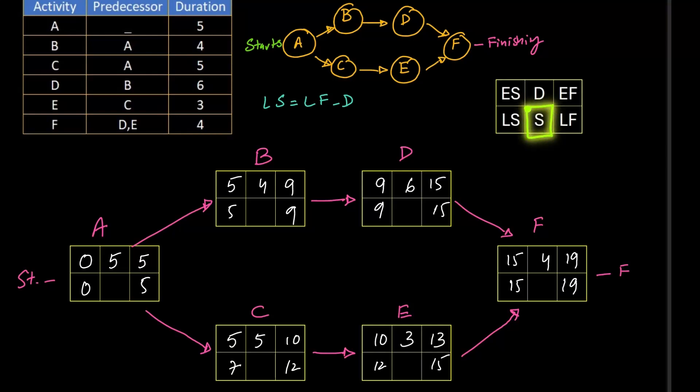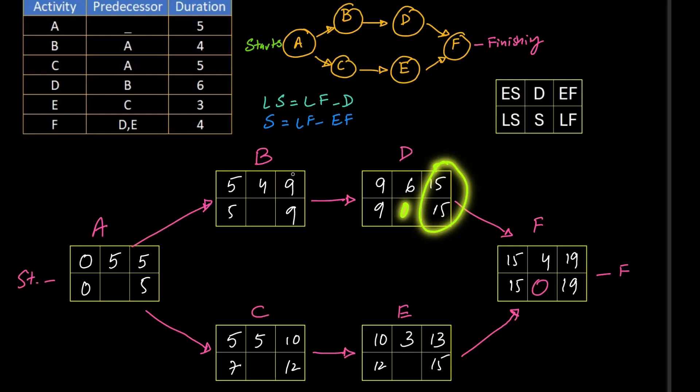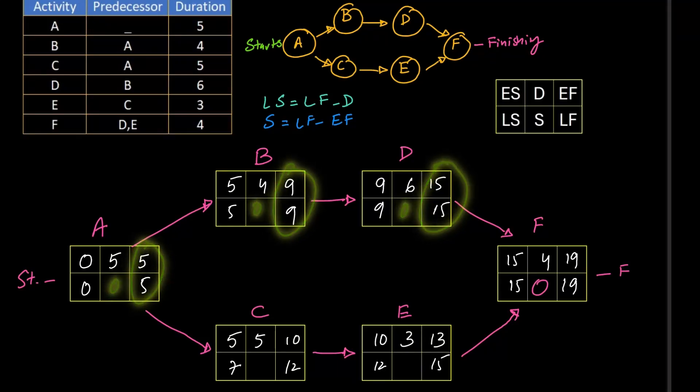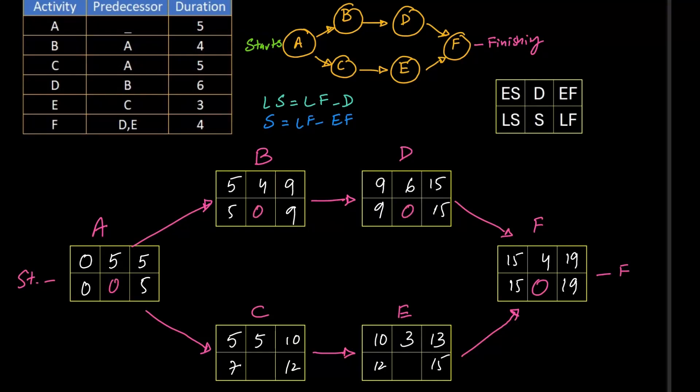Now we have left a very important box, which is this one, the slack box. If there is a presence of slack in an activity, that will mean that activity can be delayed. And slack's formula is S equals to LF minus EF. So these are the two boxes that are in action for slack. LF minus EF will give us slack for the particular activity. 19 minus 19 equals 0. 15 minus 15 equals 0. 9 minus 9 equals 0. 5 minus 5 equals 0. So we can put zeros in A, B and D. On the other hand, E has 15 minus 13, so the slack will be 2. Similarly, C has 12 minus 10, the slack will be 2 again.